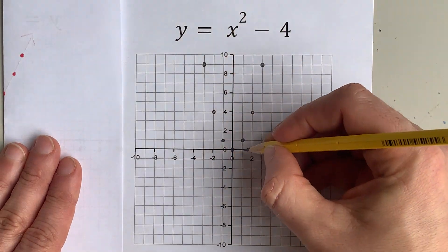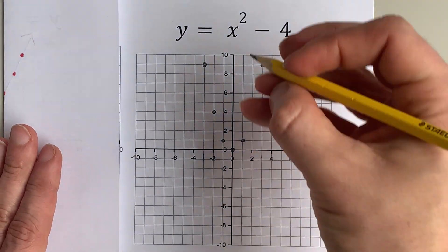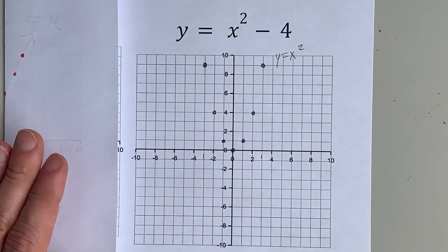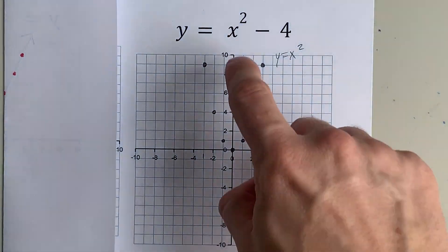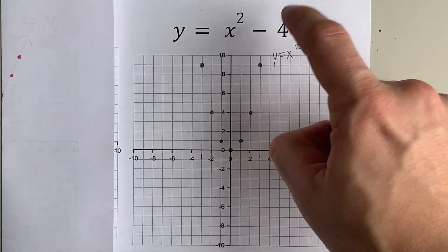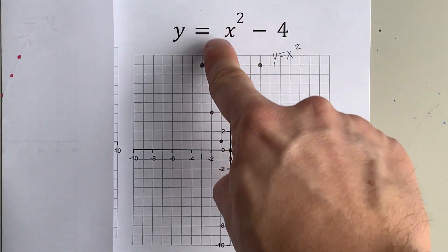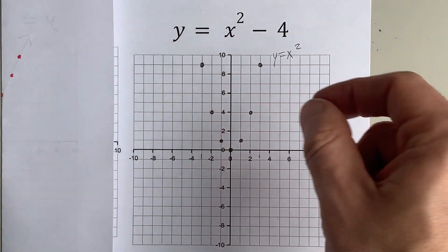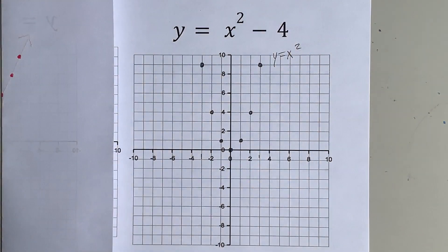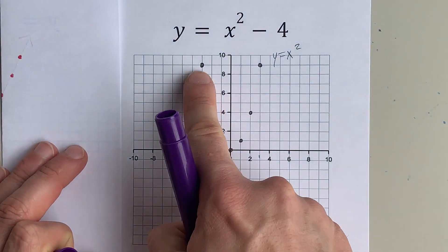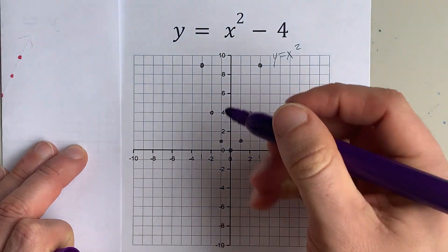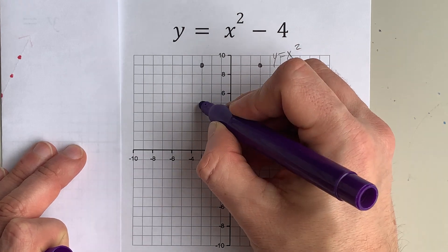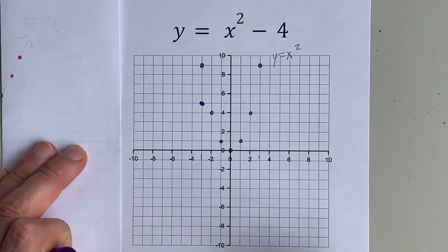What I've put here in pencil is y equals just x squared. But we were asked for x squared minus 4. That is the graph I just did, but shifted down 4 units — it's a vertical translation. So this point, which was 9 high, goes down 1, 2, 3, 4 points to here.